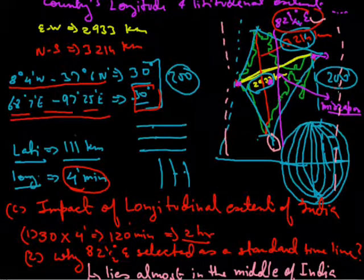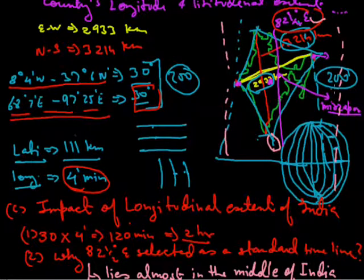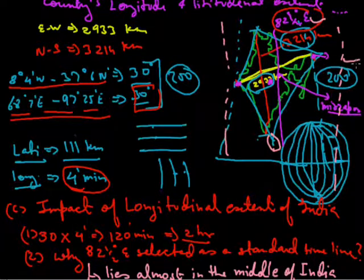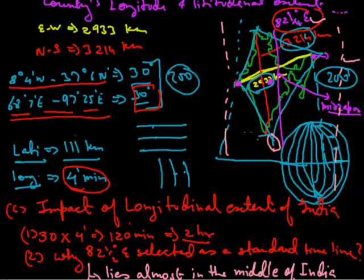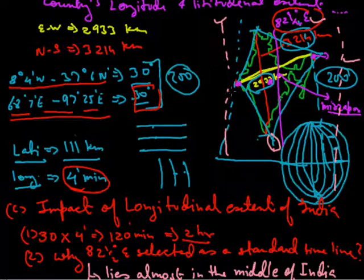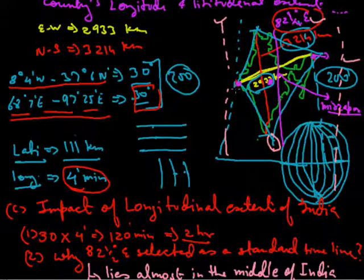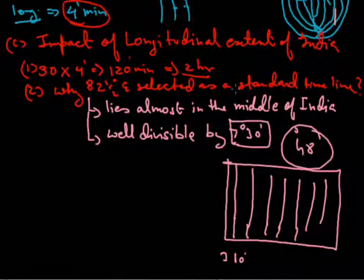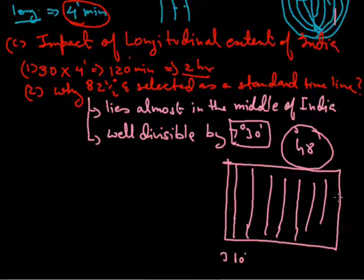Bangladesh chose this same line. Previously they had changed their timeline by half an hour, but at present they have returned to this line as it is nearest to them. For Pakistan, an adjacent line half an hour earlier is best, so they choose that one instead.